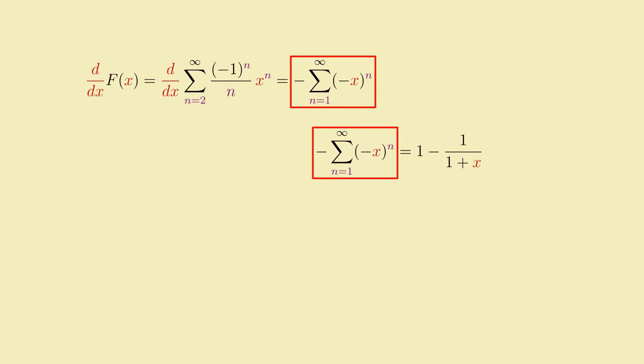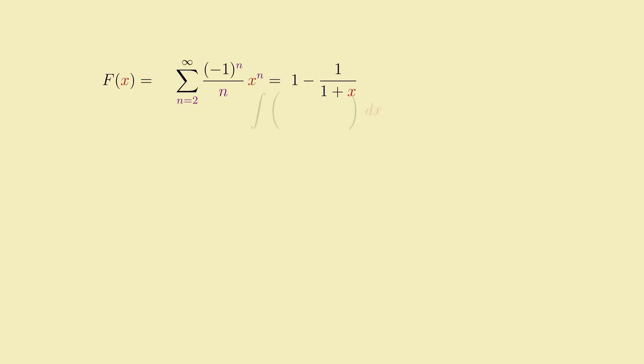So apparently, the derivative of the infinite power series we started with can be reduced to the relatively simple closed form formula 1 minus 1 over 1 plus x. We can then integrate it to get a closed form formula for the power series we started with. In this case, that'd be x minus ln of 1 plus x.